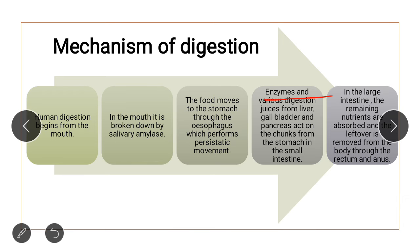Enzymes and digestive juices from the liver, gallbladder, and pancreas act on the food chunks from the stomach. In the stomach, digestive juices like pepsin and HCl break down food material further. Food is then transferred to the intestine, where secretions from the gallbladder and pancreas further break down food in the small intestine. In the large intestine, the remaining nutrients are absorbed and leftover waste is removed from the body through the rectum and anus.